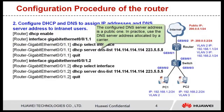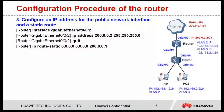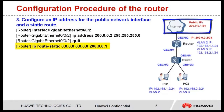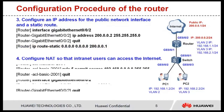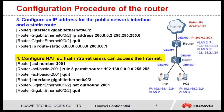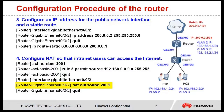The configured DNS server address is a public one. In practice, use the DNS server address allocated by a carrier. Step 3: Configure an IP address for the interface connected to the internet and a static route. The static route is the default route and the next hop address of the default route is 200.0.0.1. Step 4: Configure NAT so that internet users can access the internet. NAT is only valid for source IP addresses on network segment 192.168.0.0.